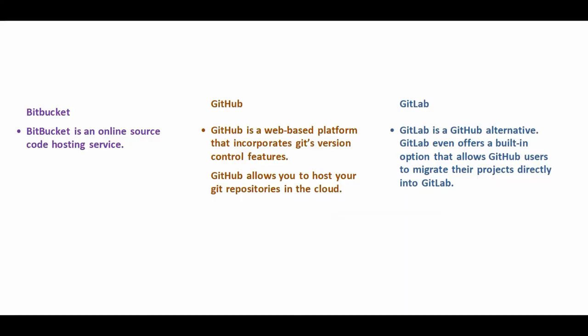Bitbucket is an online source code hosting service. GitHub is a web-based platform that incorporates Git's version control features, allowing you to host your Git repositories in the cloud. GitLab, on the other hand, is a GitHub alternative, and it even offers a built-in option that allows GitHub users to migrate their projects directly into GitLab.